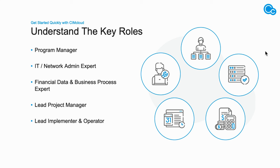On the previous slide I mentioned critical roles. What you're seeing on screen are what we call key or critical roles — hats that need to be worn by people executing the implementation. This could be internal to your organization, a third-party vendor, or leaning on SimCloud. You don't need one person per seat, but you need people that fill these roles, understand their involvement in the project, and have the capacity and domain expertise to execute.